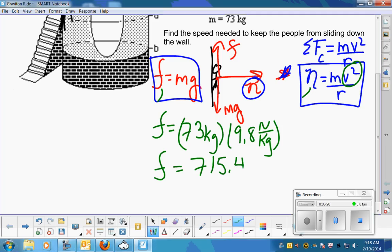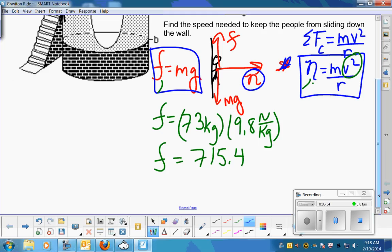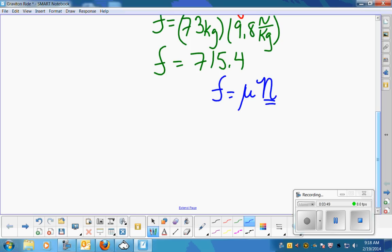So now I know friction, but I want to know normal force so I can finish this up and figure out my speed. Does anybody know a connection between friction and normal force? Remember, fun. It's the fun equation. So friction is equal to the coefficient of friction times the normal force. So since I know what friction is now and I know my coefficient of friction, I can use this to solve for normal force.